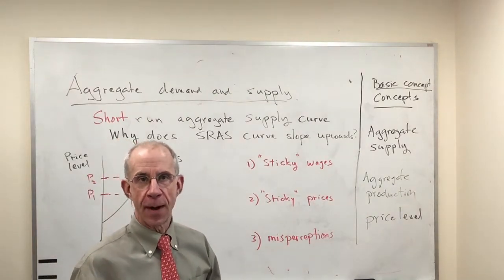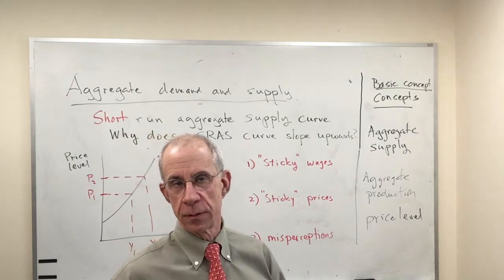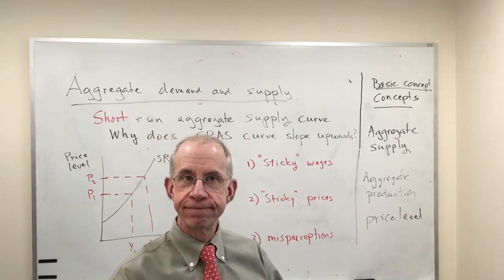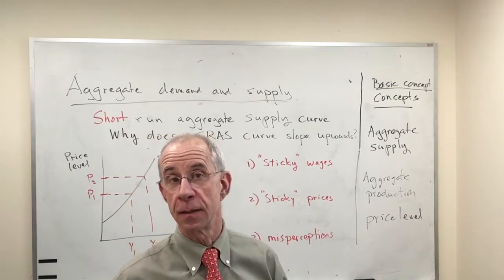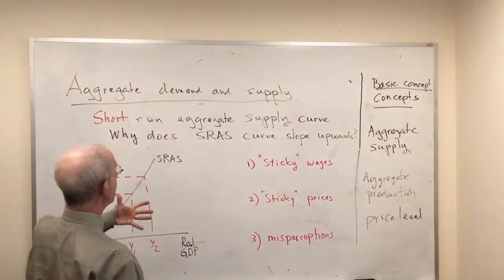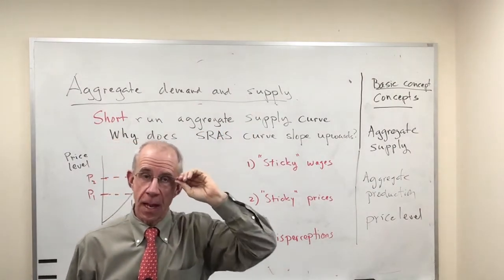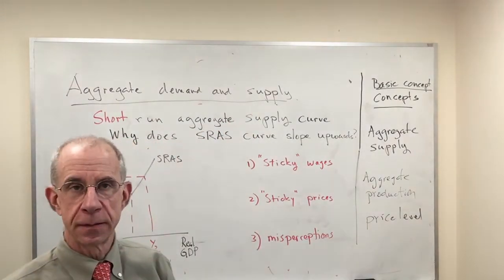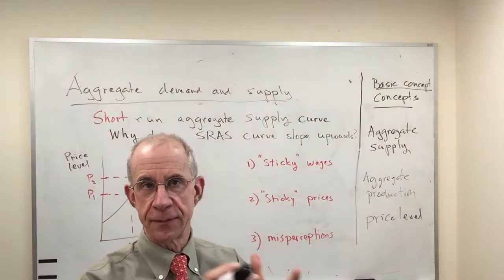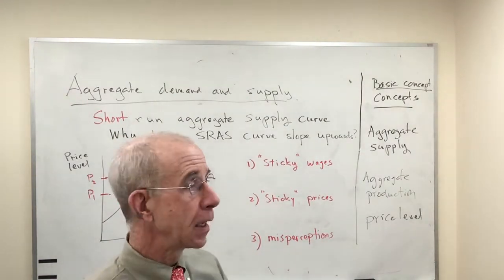We're continuing to build up the apparatus for analyzing short-term fluctuations in the economy and the government's reaction to it. The apparatus that we're going to be using is aggregate demand and aggregate supply curve, which relate the overall price level to the supply and demand for the economy as a whole.